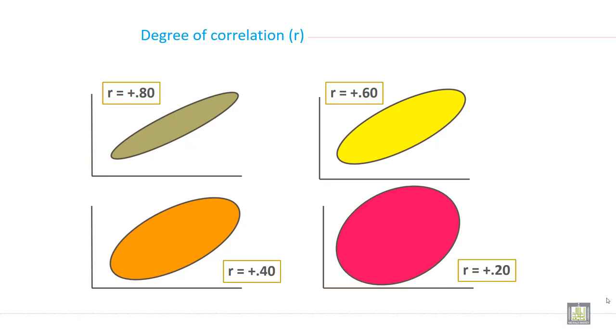If we talk about degree of correlation, here I have given four examples. Here four plots are available. In the first plot, R is equal to 0.80. What you can say? It is high positive correlation.